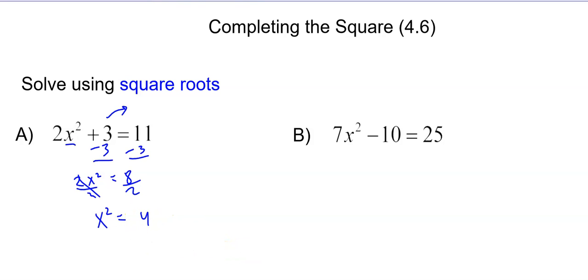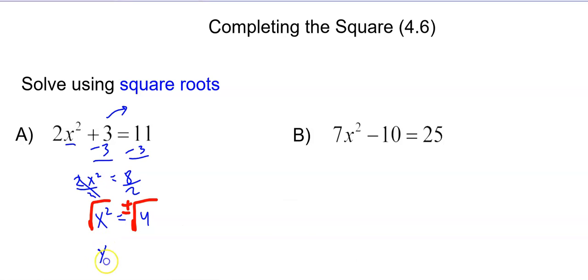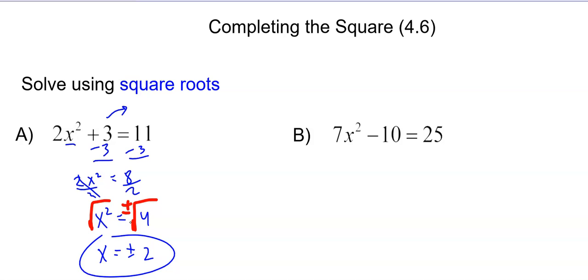Take the square root of both sides. Don't forget to put plus or minus on one side because we're taking the square root of both sides. So we get x equals plus or minus 2. We get two answers: 2 or negative 2.